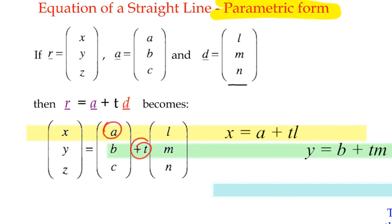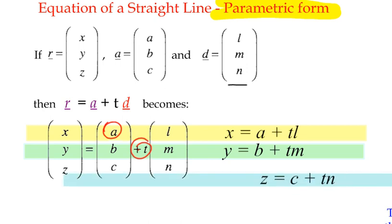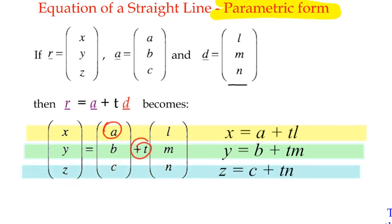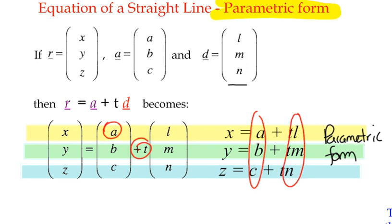We can take a slice of the Y direction and say that the Y coordinate is B plus T times M. And we can take a slice of the Z direction and say that Z equals C plus TN. We'll get three different equations, each with component parts of these vectors, and we call this the parametric form of the equation of a line.